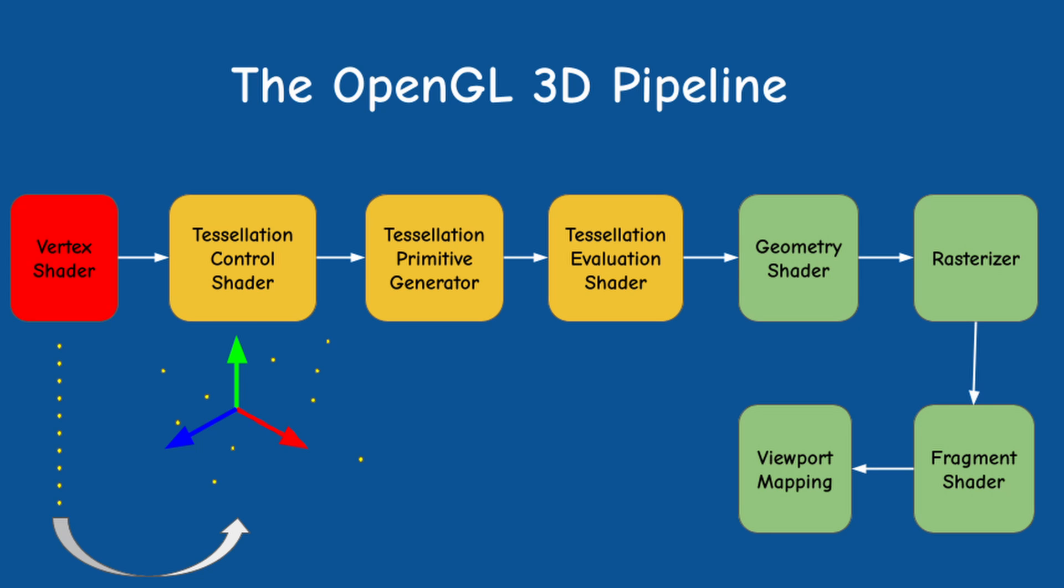You can use it for some basic manipulation but as you shall see, since tessellation is going to generate a new group of vertices, it's probably better to skip the world view projection transformation that we are used to at this stage. But the VS is still there and it's still mandatory so the minimum is to have it pass through the vertices. Back to the control shader.